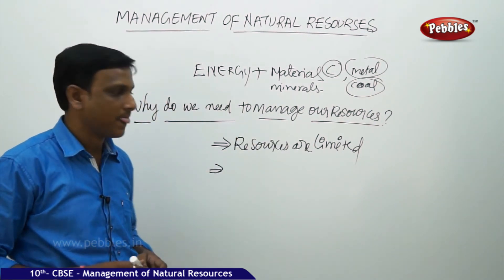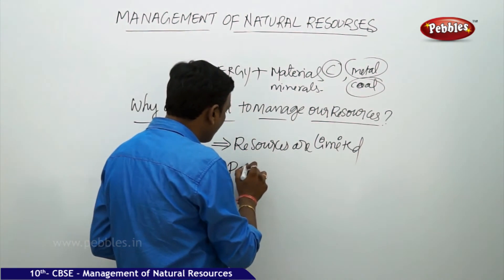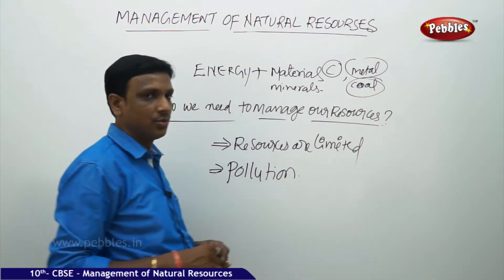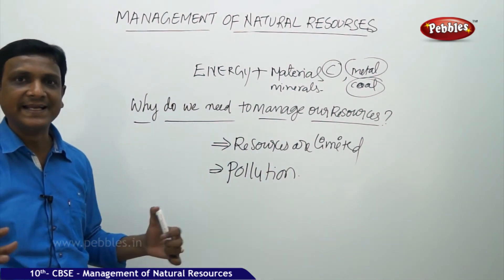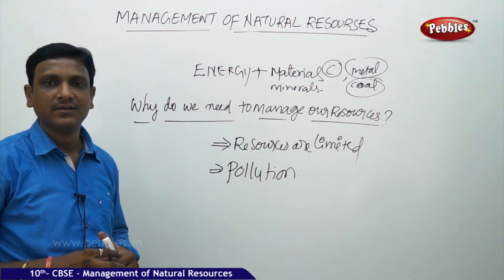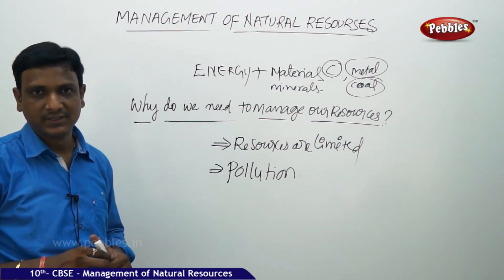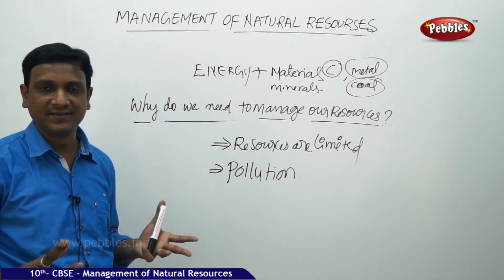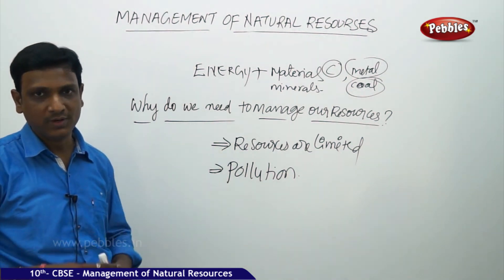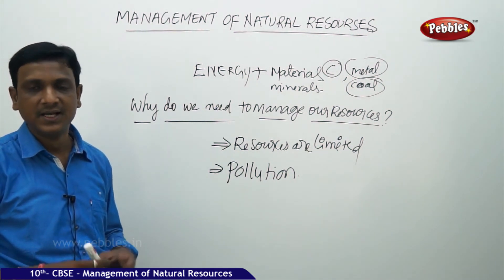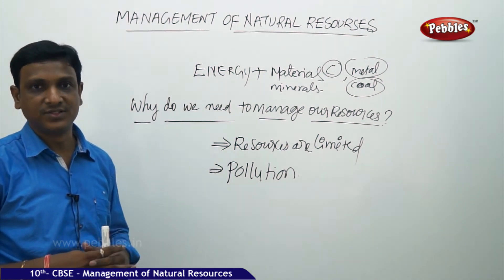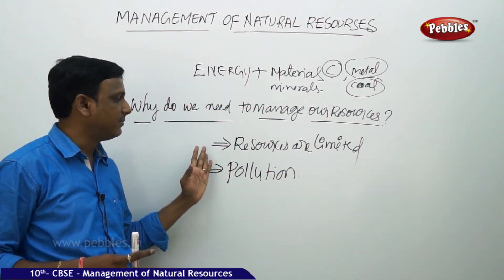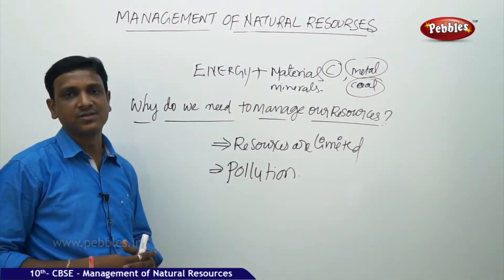The second reason is pollution. If you are using these natural resources at a very high rate in very less time, they cause pollution. Air is polluted, water is polluted, deforestation leads to less rainfall, it leads to an increase in global temperature — that is the greenhouse effect. So many problems are caused because of the overuse of natural resources. So: one, resources are limited; two, pollution is caused.